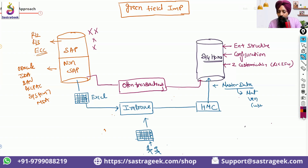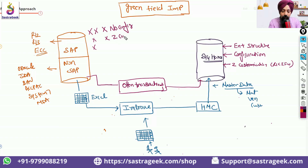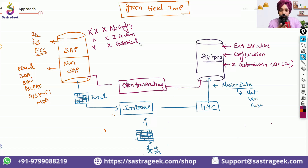Once this is done, we will completely cut off the legacy system and go ahead with S4 HANA. It's important to note: we are not bringing any configurations from the existing system. Any Z customizations are also not being brought. Historical transaction data — closed purchase orders, closed production orders, earlier sales orders — is also not brought. So: no configurations, no custom code, no historical data.